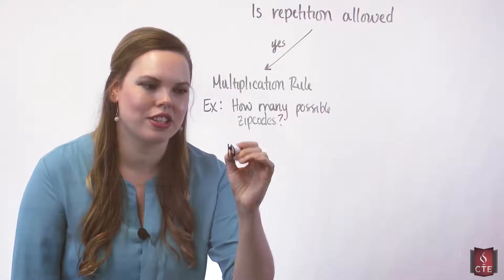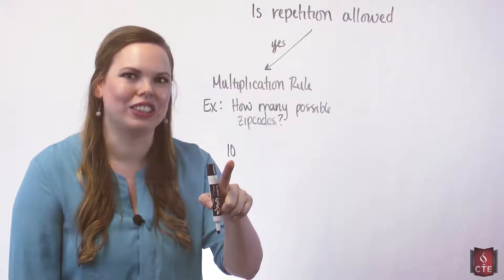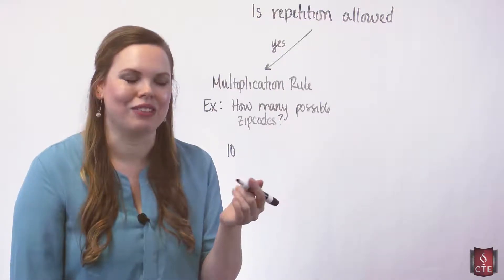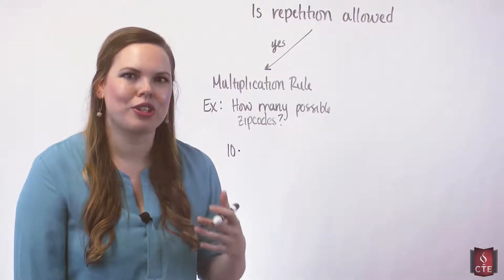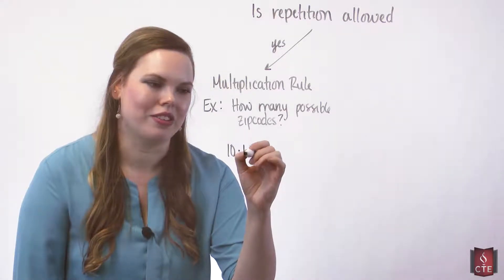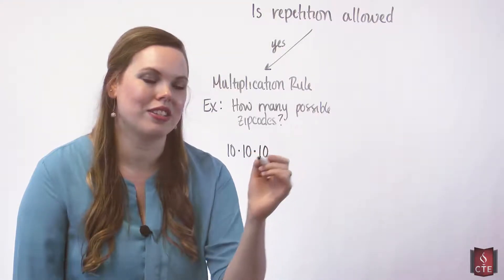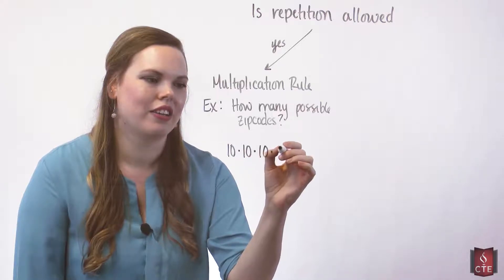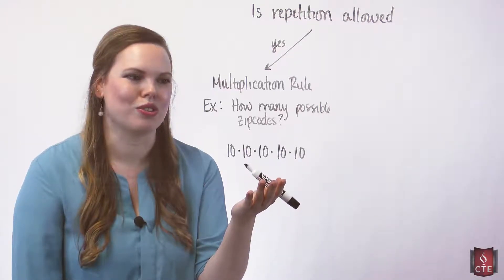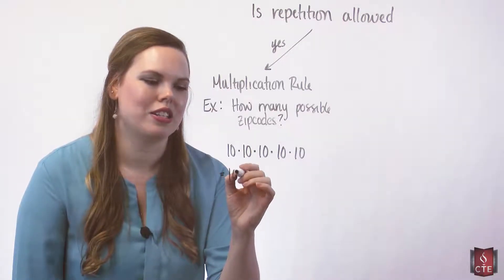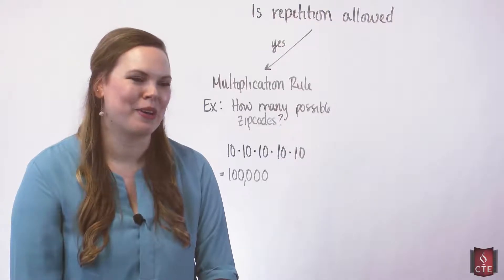How many ways can we choose the first number of a zip code? Well, there are 10 digits — don't forget about zero. So there are 10 single digits that could be that first digit. We'll keep it simple and allow zero to be one of them, even though it usually isn't. Then how many ways can we choose the second digit? Still 10. Third? We can use the same digits again, so 10. Fourth and fifth as well. This gives us 10 × 10 × 10 × 10 × 10, which equals 100,000 possible zip codes.